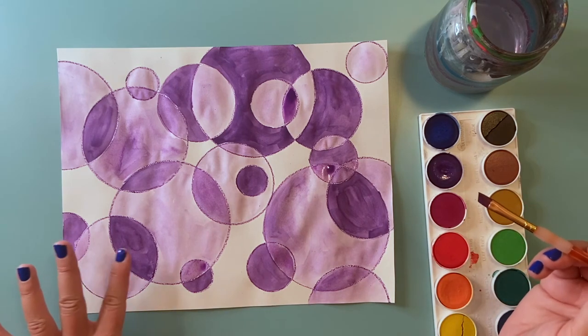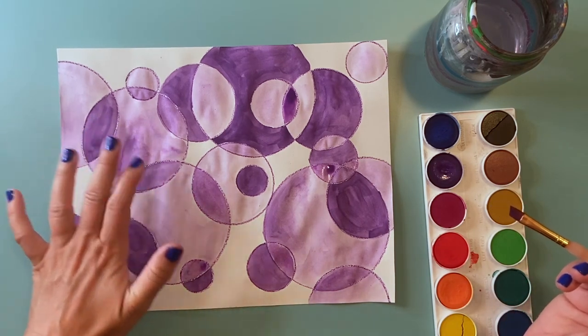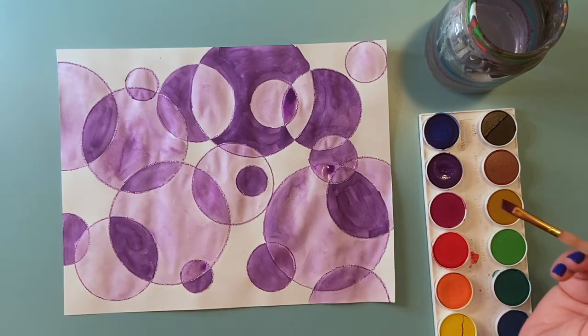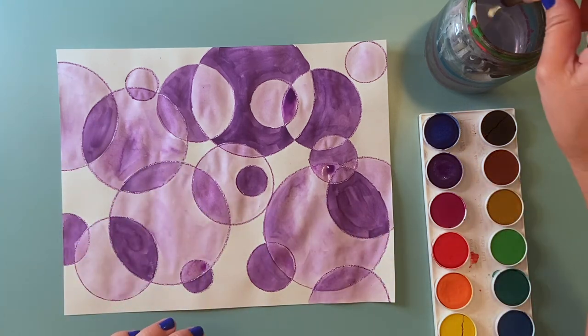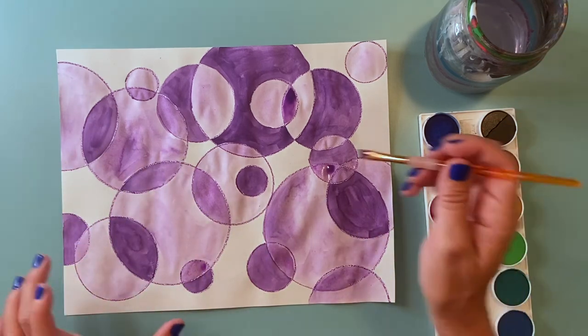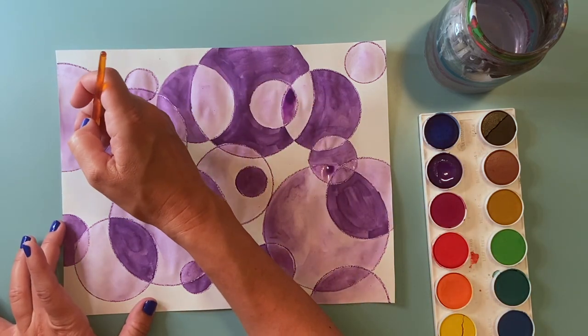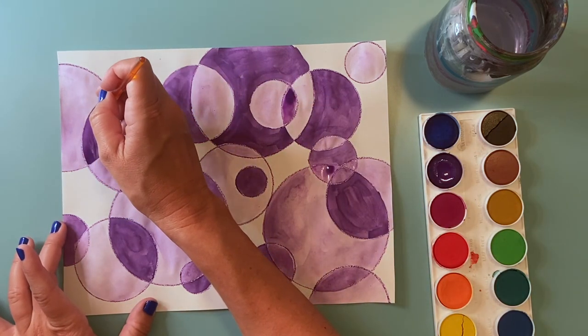So now that a lot of this has dried, some of these spots, these darker spots, I can go back with a second layer, carefully on top, just gentle, and make some of these spots even darker.